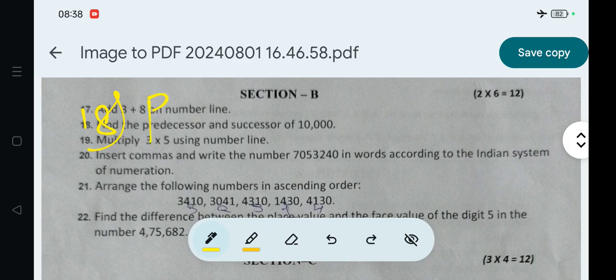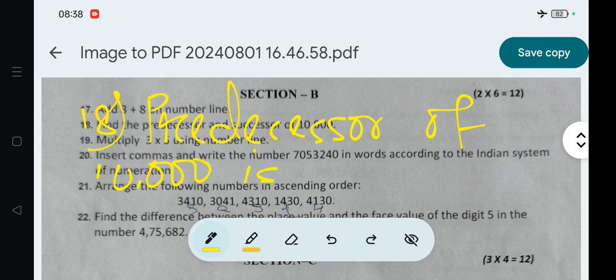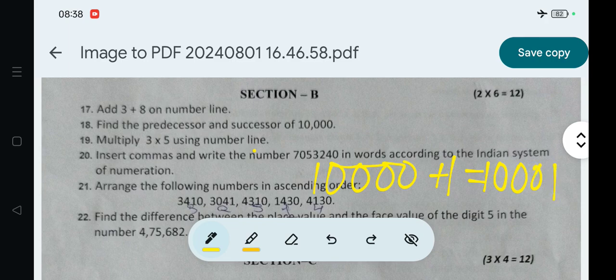Predecessor of 10,000 is: write 10,000 minus 1 is equal to 9,999. Successor of 10,000 is: add, 10,000 plus 1. 10,000 plus 1, that is equal to 10,001. It's our successor.